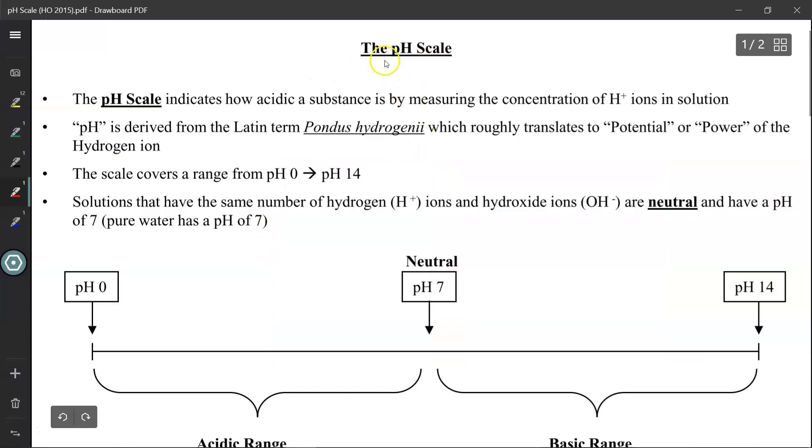We use something called the pH scale to measure how acidic or how basic a substance is. Specifically, the pH scale measures how much H+ ions are floating around inside the solution. The pH comes from the Latin term pondus hydrogeni, which roughly translates to the potential or power of the hydrogen ion. This scale goes from 0 to 14. Essentially, solutions that have the same number of hydrogens and hydroxides turn into water. Pure water has a pH of 7. We call this pH neutral because it's neither an acid nor a base - it's both of them together canceling each other out to create water.